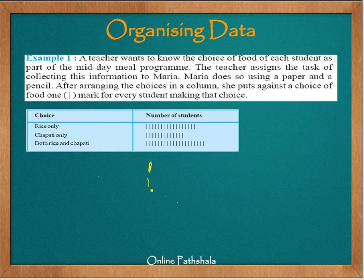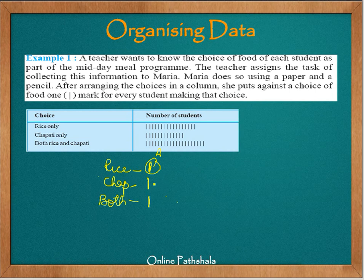If a student chooses only rice, one tick goes under rice; only chapati gets a tick under chapati; both rice and chapati gets a tick under both. This way, for all the students we keep adding ticks. At the end of the day, we have to count all these ticks. But counting a large number of individual ticks can lead to mistakes.